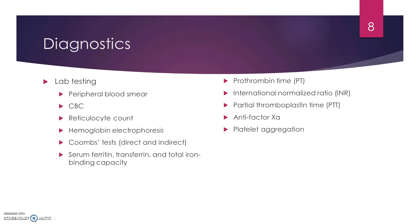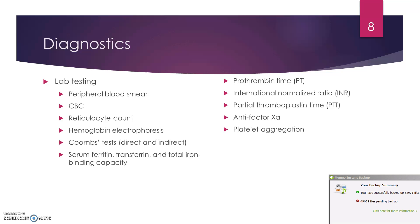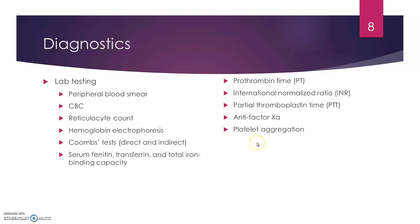For diagnostics, lab tests include a peripheral blood smear to look at cell types, a CBC for red blood cells, white blood cells, and platelets, and a reticulocyte count to assess how fast cells are being released from bone marrow. We can look at hemoglobin electrophoresis to assess size, shape, and quality. A Coombs test — direct or indirect — checks blood product compatibility. Iron tests for anemia, clotting factors such as PT, PTT, INR, and anti-factor Xa, and platelet aggregation to assess clotting time.